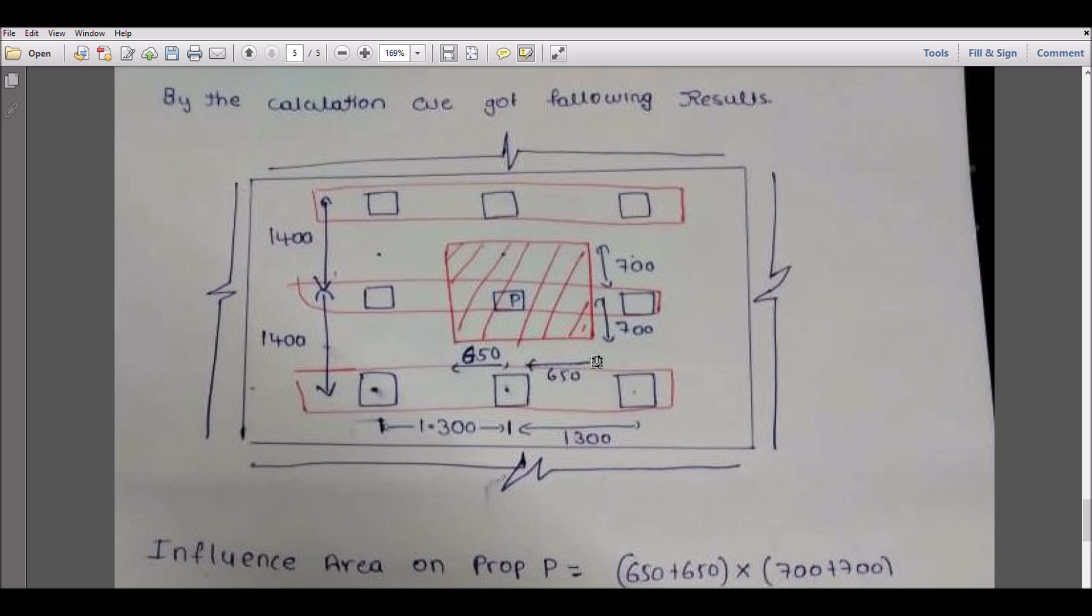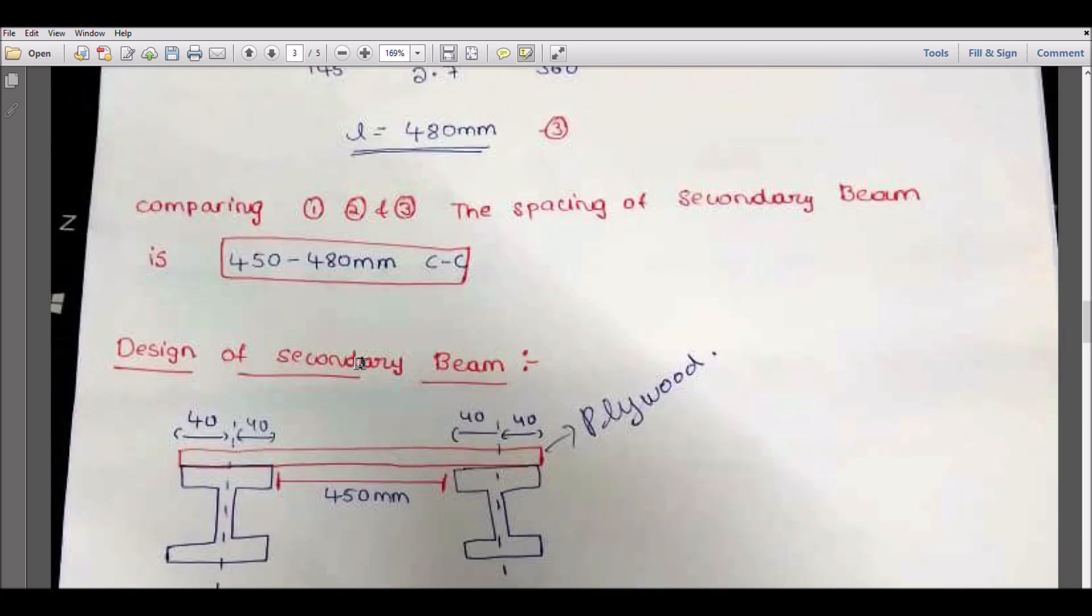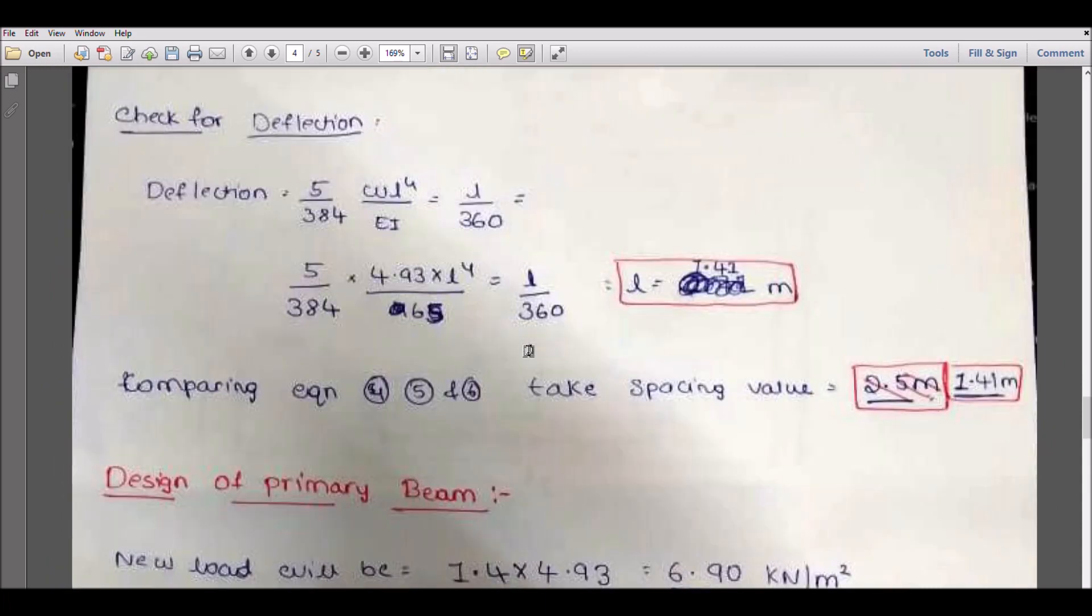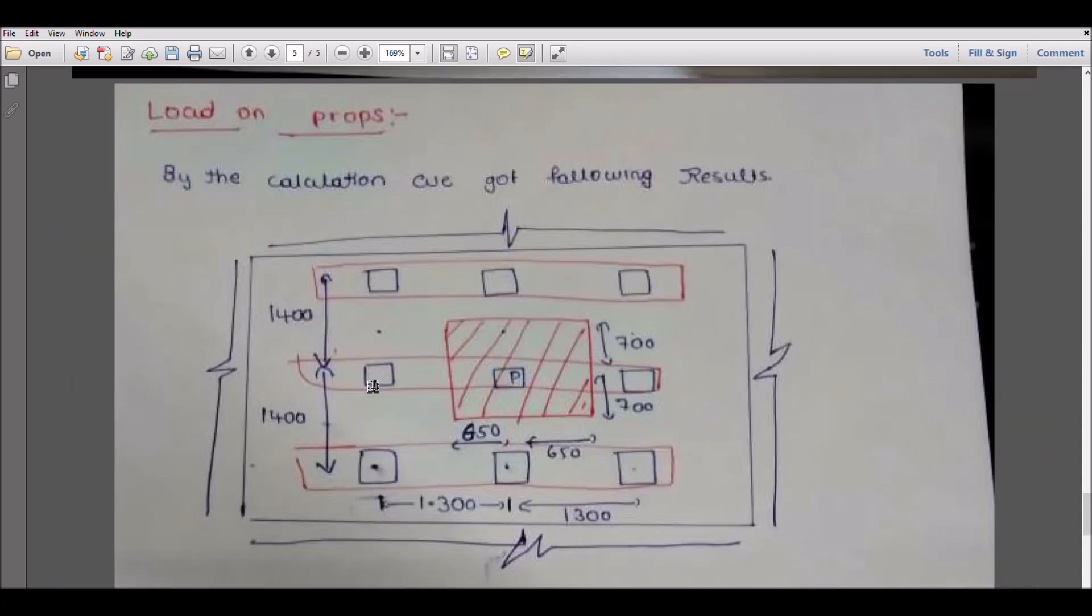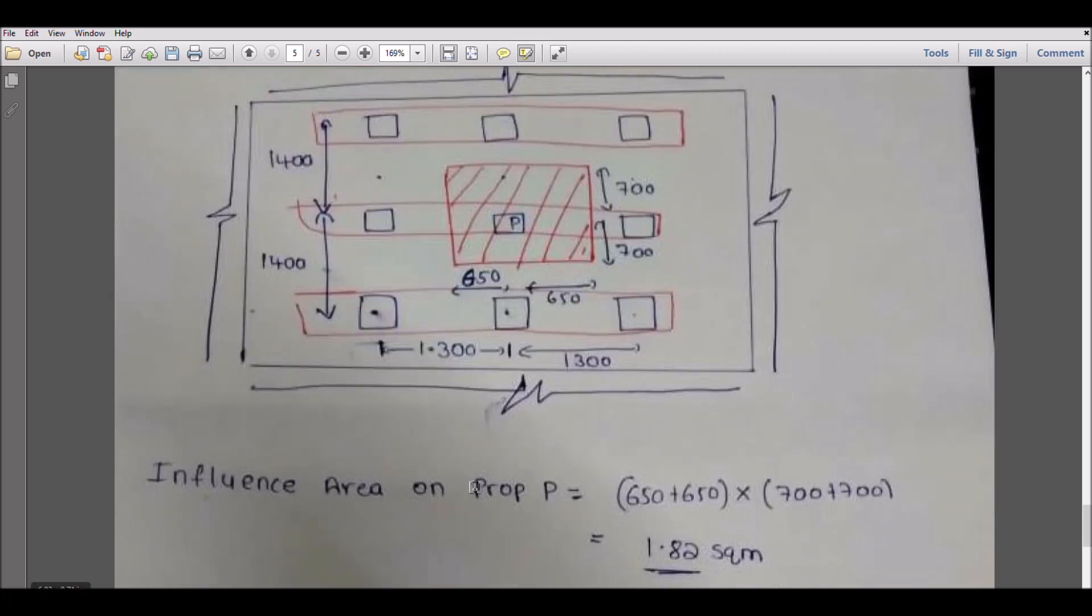Here you know that this is nothing but the primary beam spacing, which is 1.4. Here you can see the beam is 1.4, so we are dividing it from 700, 700. So influence area on the prop will be like this: 650, 650 into 700. This rectangle area we calculated.